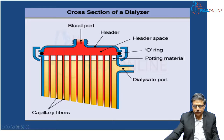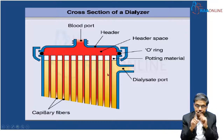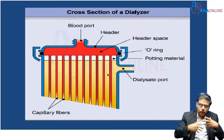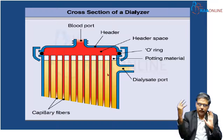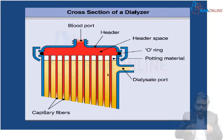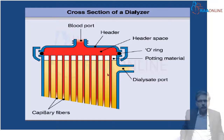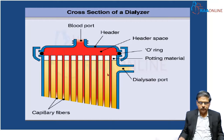Likewise, blood enters from the top and flows through all the capillaries. At the bottom, you have a similar exit port — blood goes this way. There is no actual mix-up of blood and the dialycate. Blood goes through the capillary fibers, and the dialycate runs around the blood. What separates them is the capillary fibers, which are made of semi-permeable membranes of various materials like polysulfone, polyamide, and other materials which act as a semi-permeable membrane like a sieve.